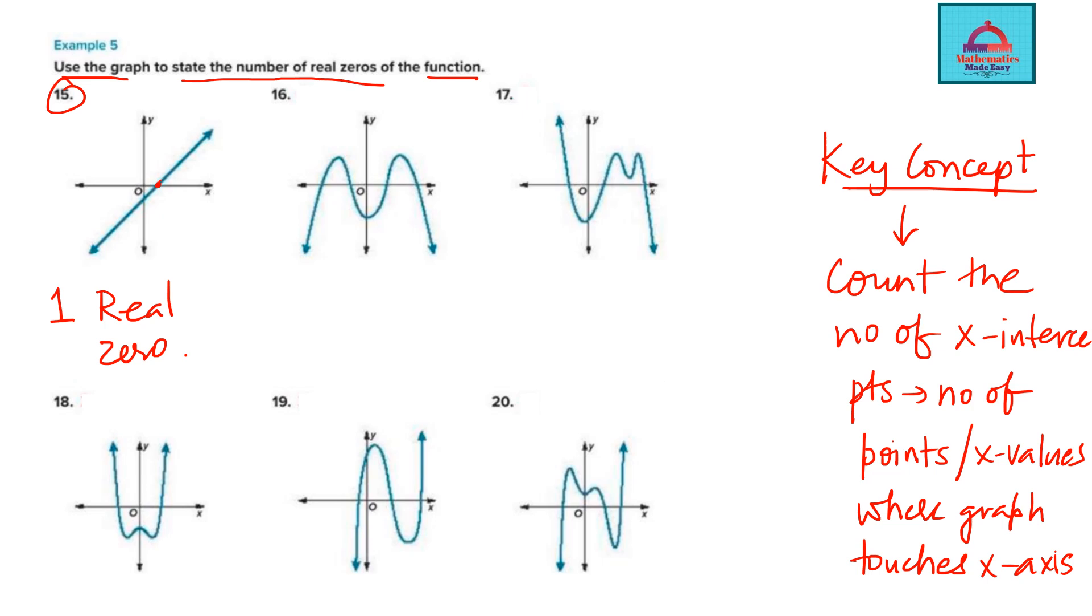Let's count this one: 1, 2, 3, 4. So the graph of question 16 crosses the x-axis 4 times, so there are going to be 4 real zeros. This one: 1, 2, 3. How many real zeros? 3 real zeros.